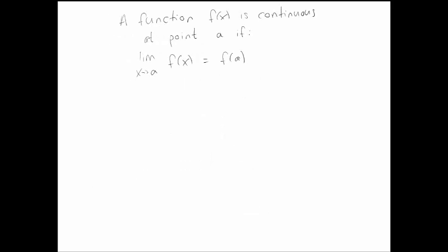We learned that a function is continuous at a point if the value of the function at that point and the limit of the function as x goes to that point are the same. And, of course, this implies that both of them exist.